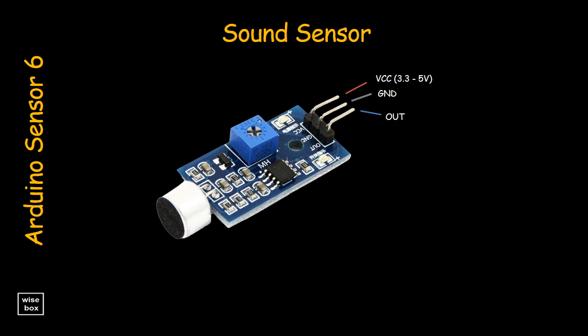The sound module consists of a sensitive capacitance microphone for detecting sound and an amplifier circuit. The output of this module is both analog and digital. The digital output acts as a key, and it activates when sound intensity has reached a certain threshold.